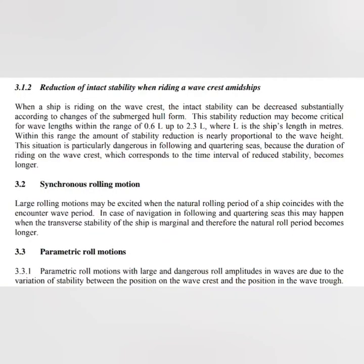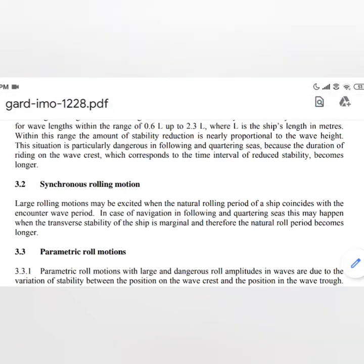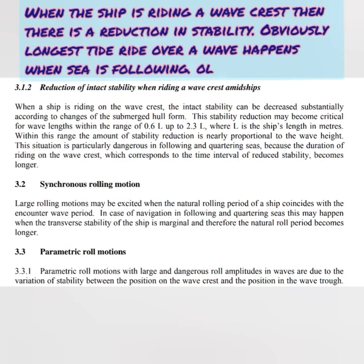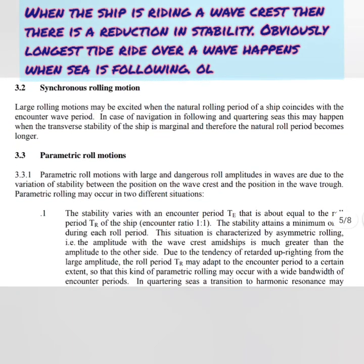The second danger associated with a following sea is reduction of intact stability when riding a wave crest amidships. When a ship is riding a wave crest, intact stability can be decreased substantially due to changes in the submerged hull form. This stability reduction is highest when the wavelength is in the range of 0.6 to 2.3 times the ship's length, and the amount of reduction is proportional to wave height. During following or quartering seas the duration of riding the wave crest is comparatively longer, so the reduction in stability occurs for a longer period.